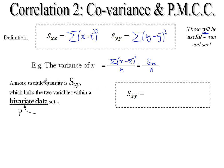A more useful quantity is SXY, and that links two variables within a bivariate data set. So we'll just label here what that is, and we discussed this in lesson one. And this is data which comes in pairs, essentially. That's pretty much it.